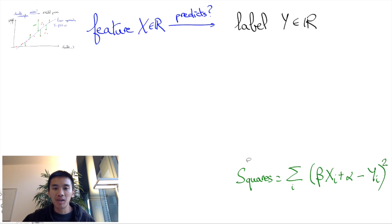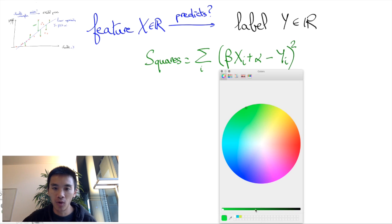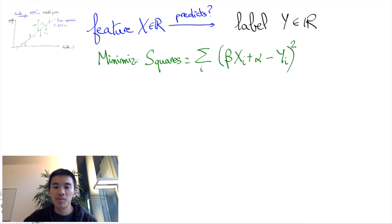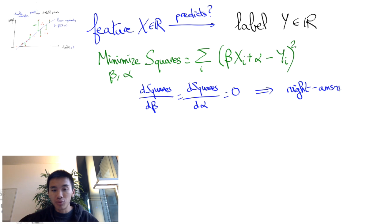Indeed, we want to minimize a quadratic convex form squares with respect to two variables beta and alpha. To do so, we simply need to take the derivatives of squares with respect to beta and alpha and sort of brute force our way out of these.